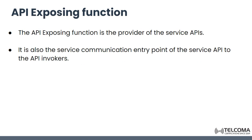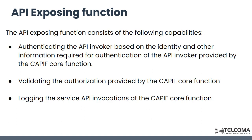Next is the API Exposing Function, AEF. The exposing function is basically the provider of these APIs and is the service communication entry point of various service APIs to the API invokers. Its capabilities include: it authenticates the API invoker based on identity and other information required for authentication, as provided by the KPIF Core Function. It validates the authorization provided by the KPIF Core Function, and it logs the service invocations at the KPIF Core Function.